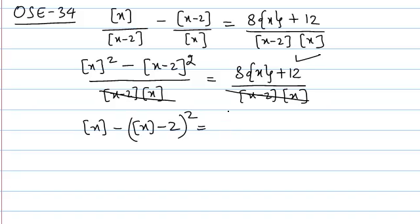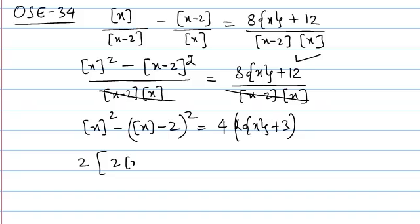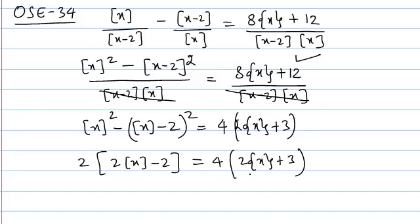We can take 4 out of the expression. Now we apply the a squared minus b squared formula: a minus b factor is 2 and a plus b is 2 into greatest integer of x. We take 2 common and cancel the 4.